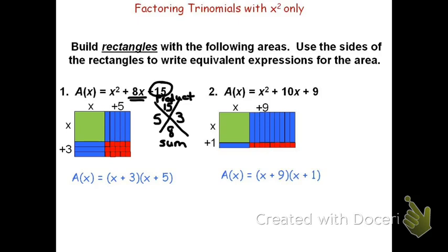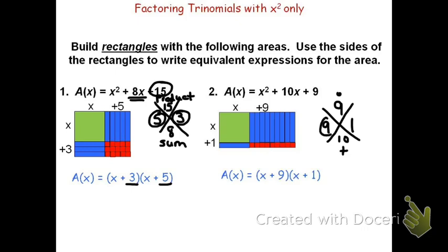Be careful — you can only use the diamond problem without the boxes if the problem is a trinomial with a 1x squared. If it is a 1x squared, we can go straight from the diamond problem and say these two numbers generate our factors: the 5 and the 3. Therefore, it's the quantity x plus 5 times the quantity x plus 3. In a similar fashion for the second problem, we're looking for two numbers that multiply to be 9 but add to be 10. 9 times 1 is 9, and 9 plus 1 is 10. Therefore the 9 and 1 show up as my factors: the quantity x plus 9 times the quantity x plus 1. Again, this works really well if it's a trinomial with a 1x squared.